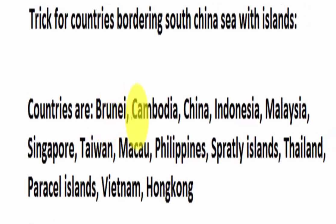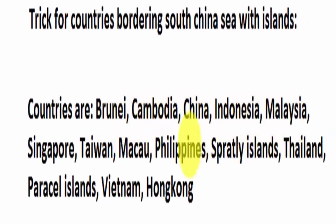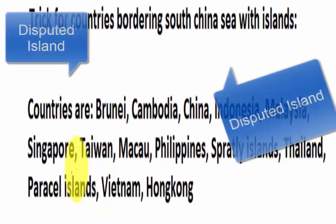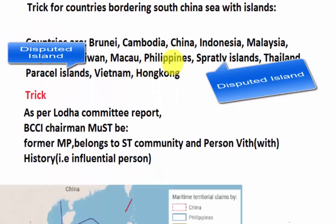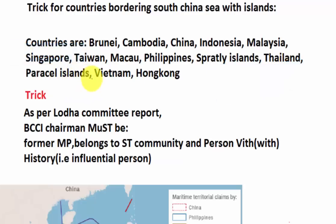The countries surrounding the South China Sea are: Brunei, Cambodia, China, Indonesia, Malaysia, Singapore, Taiwan, Macau, Philippines, Spratly Islands, Thailand, Paracel Islands, Vietnam, and Hong Kong.